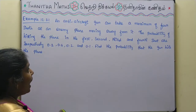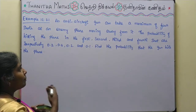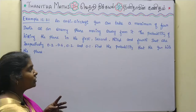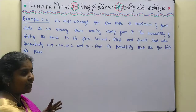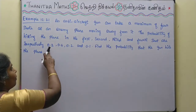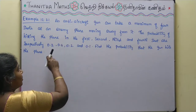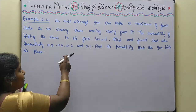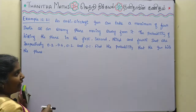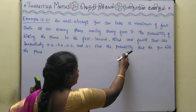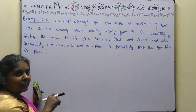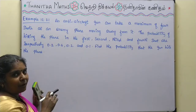There are 4 shots at the plane. The probabilities are: 1st shot 0.2, 2nd shot 0.4, 3rd shot 0.2, and 4th shot 0.1. Find the probability that the gun hits the plane.